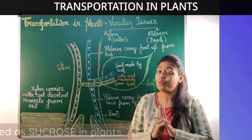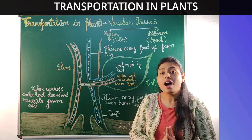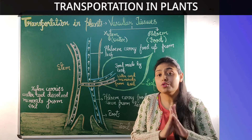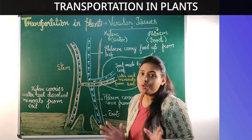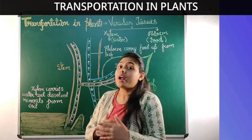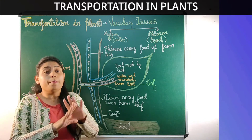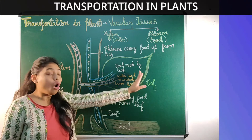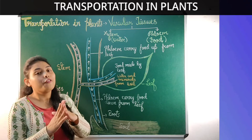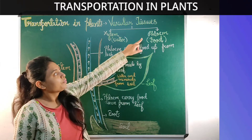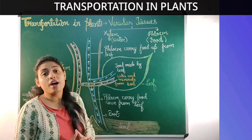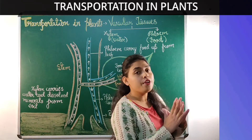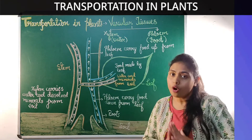Remember this important point: in plants, glucose is transported in the form of sucrose. The tissue responsible for transporting food from the leaf to different parts of the plant body is phloem.